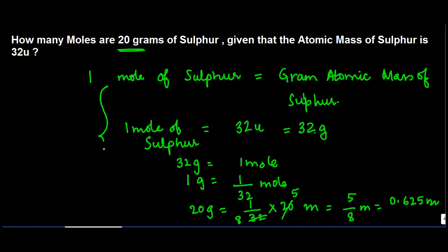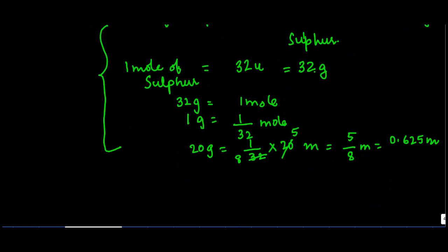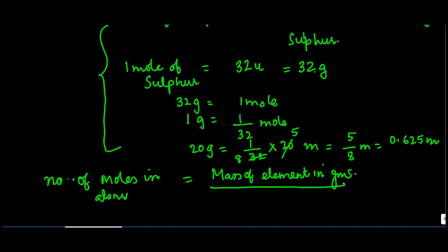I tried to explain this in detail. Otherwise, if you want to find out, you can simply use the formula: the number of moles in atoms equals the mass of element in grams divided by the gram atomic mass of that element.